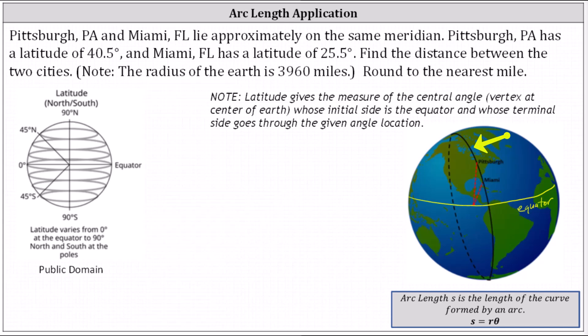Pittsburgh has a latitude of 40.5 degrees, and Miami has a latitude of 25.5 degrees. Find the distance between the two cities. Note the radius of the Earth is 3,960 miles. Round to the nearest mile.